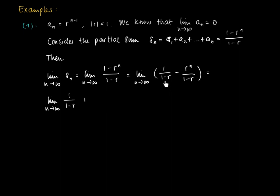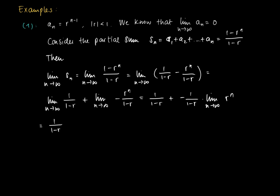The first piece is a constant sequence, so the limit as n goes to infinity of 1/(1 minus r) plus the limit as n goes to infinity of minus r^n/(1 minus r). Both limits exist: the first gives 1/(1 minus r), and for the second we can factor out the constant minus 1/(1 minus r), leaving the limit as n goes to infinity of r^n. But the limit of r^n is 0.